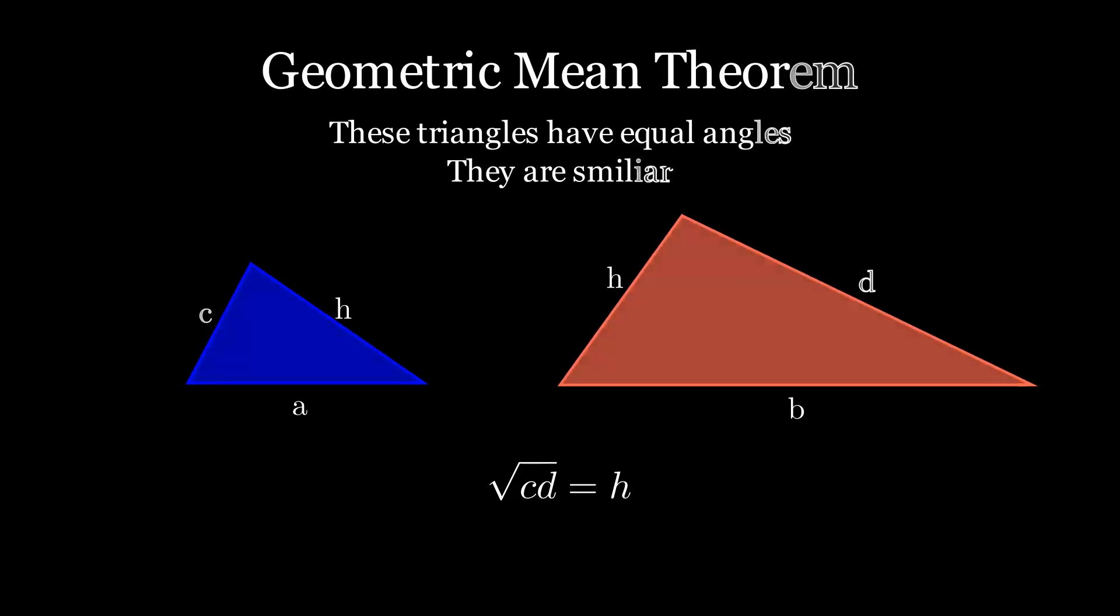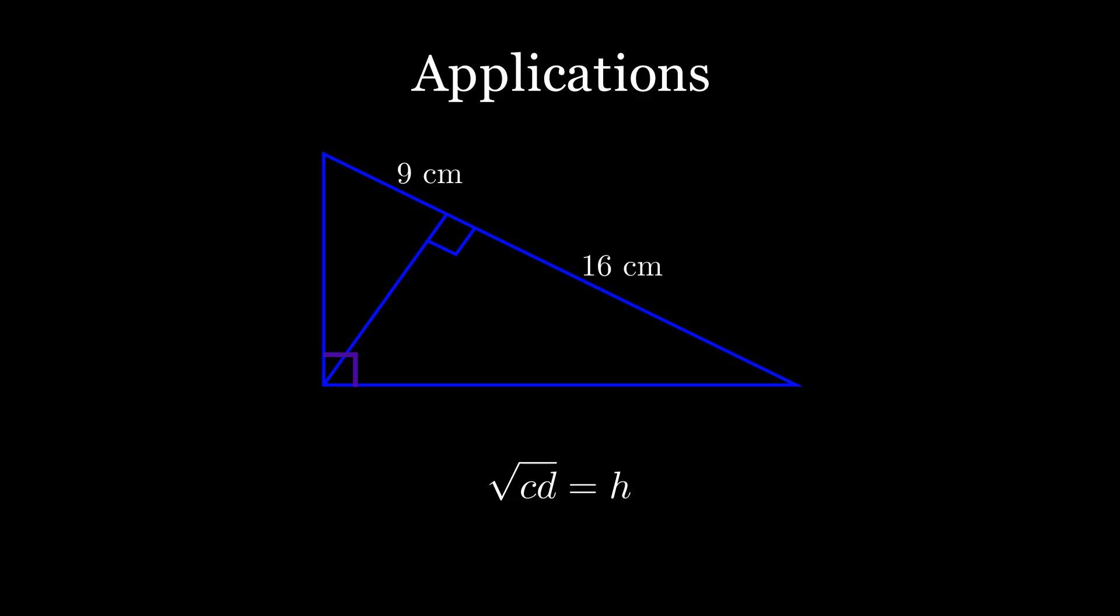Isn't it amazing? But no math fact is cool if we don't know how to apply it. So here is a simple question. The altitude divides the hypotenuse of the triangle into two parts of lengths 9 and 16 centimeters. What is the area of the triangle?